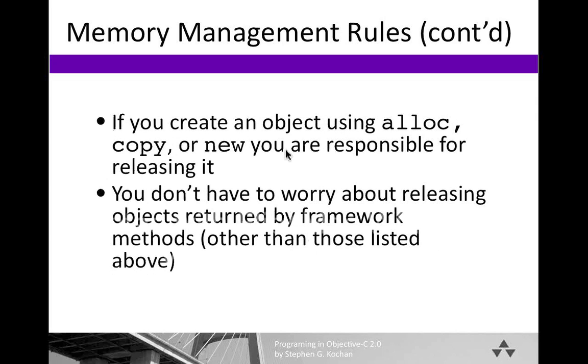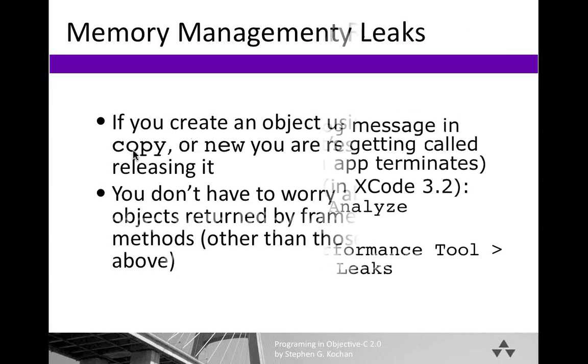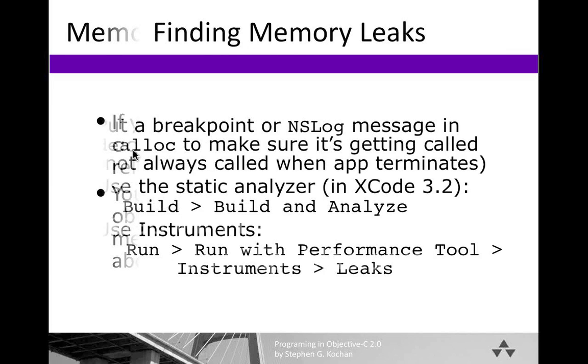If you create an object using alloc, copy, or new, you're responsible for releasing it. And you don't have to worry about releasing objects returned by framework methods other than from the methods listed above. And by copy, this includes mutable copy as well, obviously.